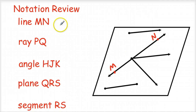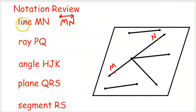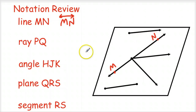For notation review, another way to write line MN is using the two capital letters MN with a line above it with arrows on each end. So you can either write out the word 'line MN,' or without writing out the word, you can just draw the little symbol above. Looking at the picture, that's the only line there.